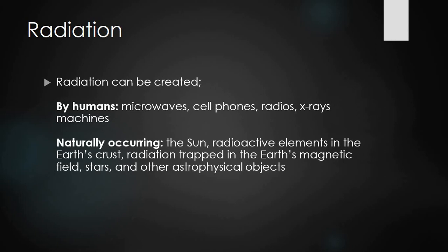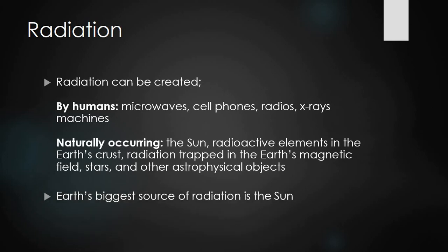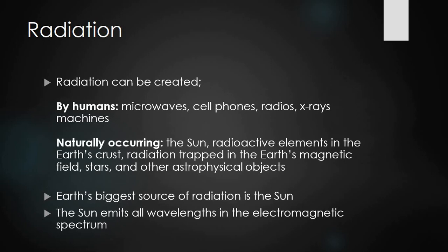Radiations also come from astrophysical objects. Earth's biggest source of radiation is the sun. The sun emits all wavelengths across the electromagnetic spectrum — meaning we receive every single wavelength of the electromagnetic spectrum from the sun.